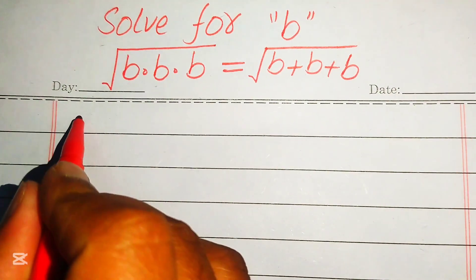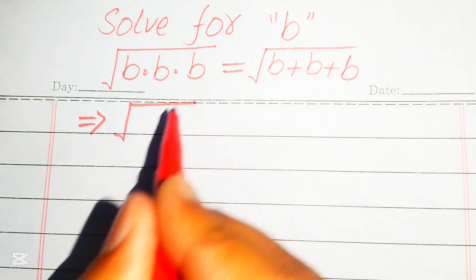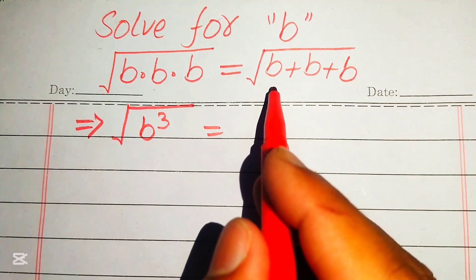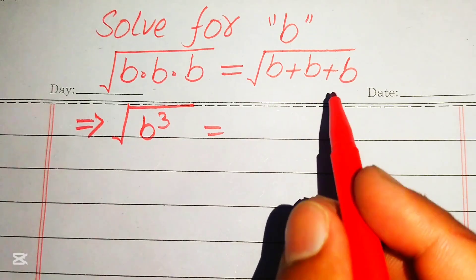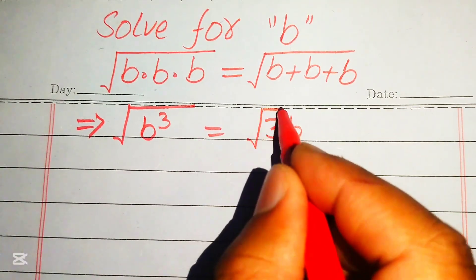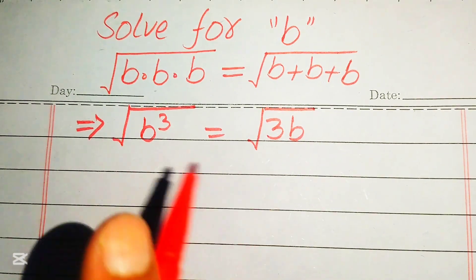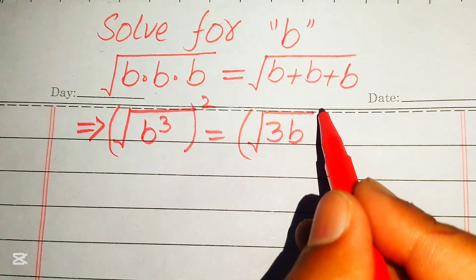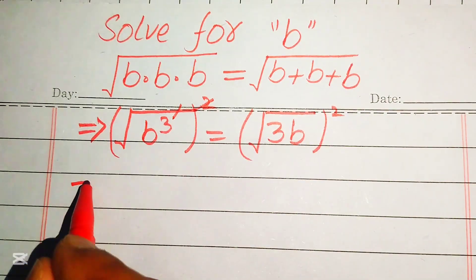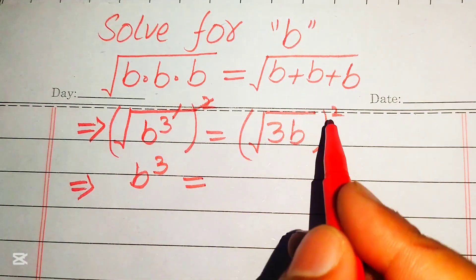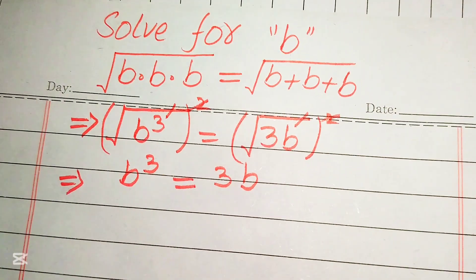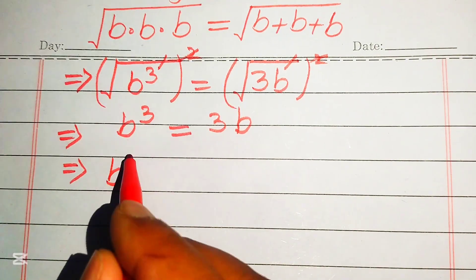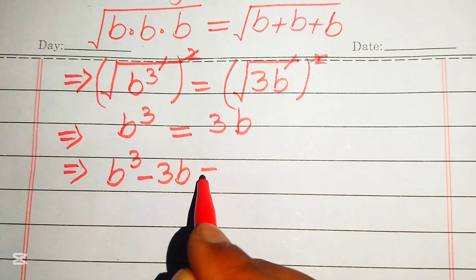First we simplify the terms on both sides. On the left hand side, b is multiplied 3 times, so we write it as b cubed. On the right hand side, b is added 3 times, so we write it as the square root of 3b. To remove the square roots, we square both sides, giving us b cubed equals 3b, or b cubed minus 3b equals 0.